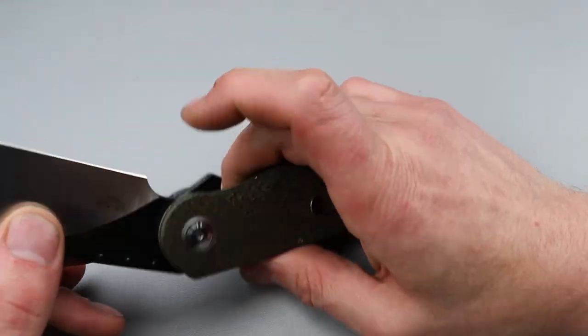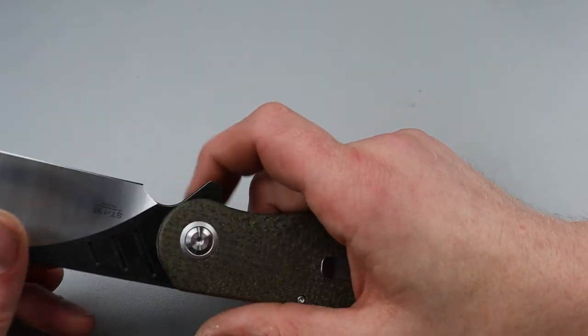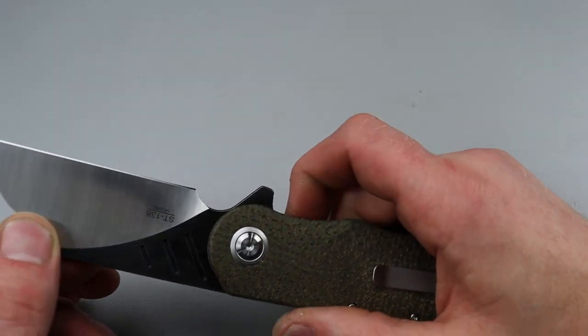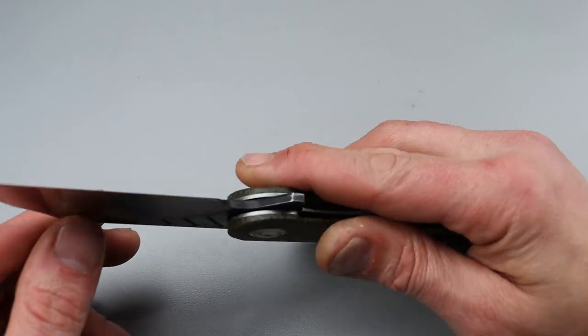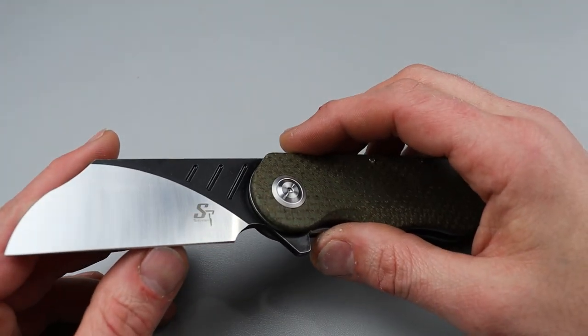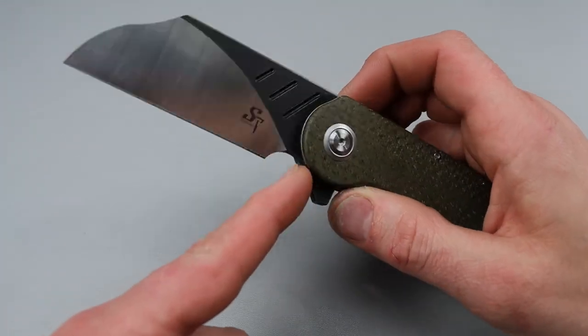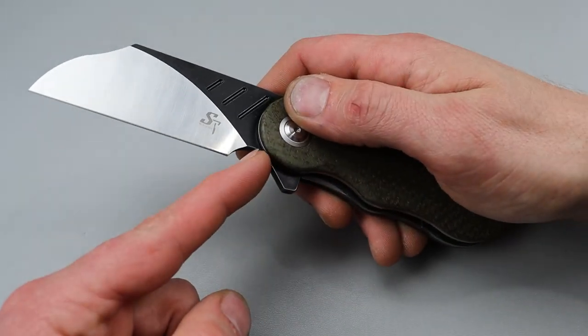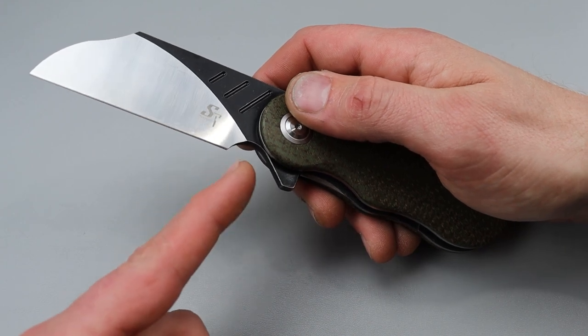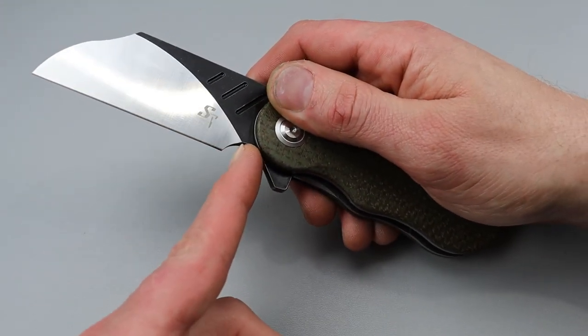The next negative thing is you would think this choil would be good, right? Well, it's almost good but it does have one major flaw. Even though they did cut out a finger choil, which is good, they didn't go far enough to get past the plunge grind.